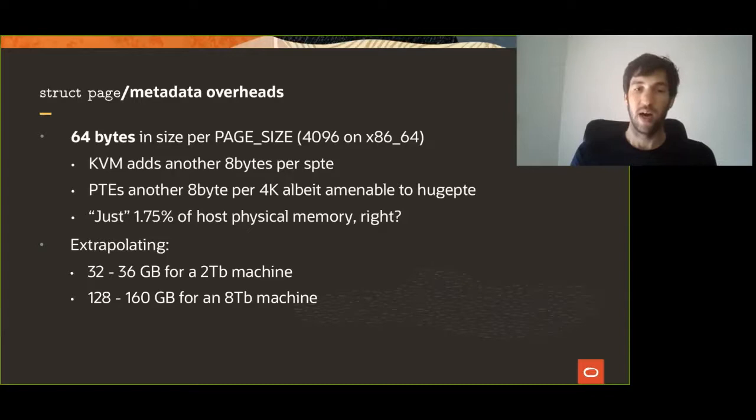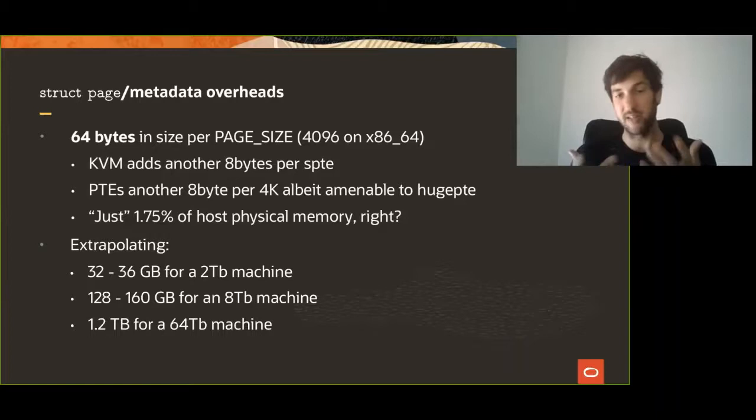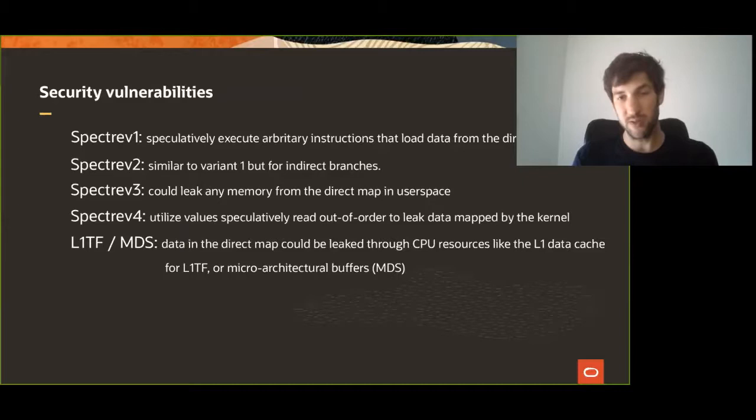If we take into consideration where this is going and the fact that VMs are getting more dense, if you take a 64-terabyte machine to put this overhead in perspective, you would be spending about 1.2 terabytes in struct page overhead.